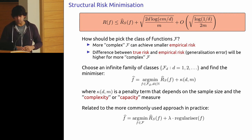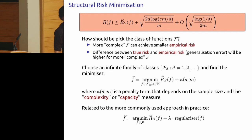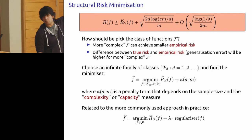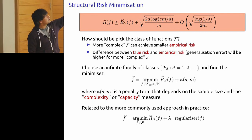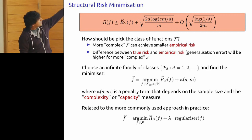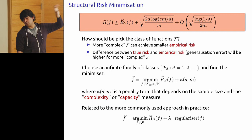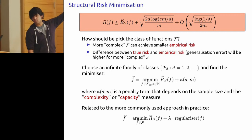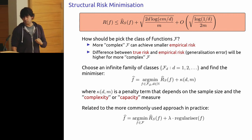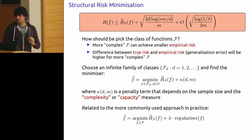A complex model is disfavored because there's a term proportional to √(D/M) bounding the gap between true and empirical risk. As D gets very large, you can't say much about the difference between true and empirical risk. What we ultimately care about is having the true risk be small, not just the empirical risk — this is how complexity plays a role.